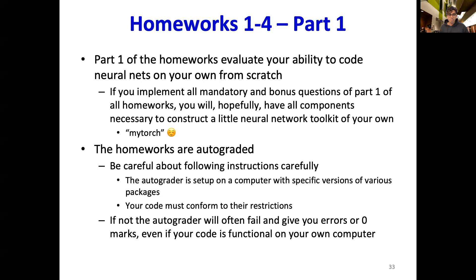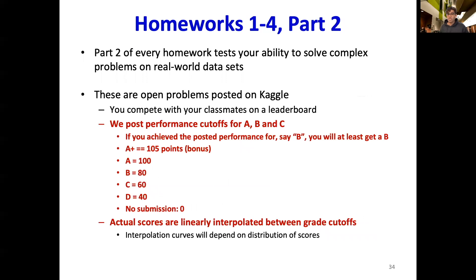The part twos of all homeworks test your ability to solve complex problems on real-world datasets. These are open problems posted as Kaggle competitions, where you get to compete with your classmates on the leaderboard. At a certain point in every assignment, we post the performance cutoffs for achieving an A, B, or C grade. If you achieve the posted performance for, say, B, you will get at least a B grade. Your performance means some metric on the given assignment, such as model accuracy. If you make no submission, you get zero on that assignment. Actual scores are linearly interpolated between the grade cutoffs.